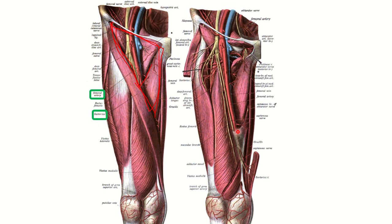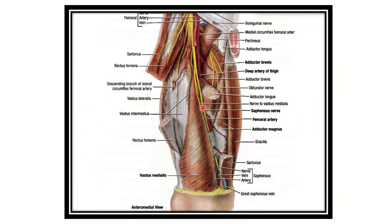The femoral artery passes through the adductor canal and goes to the popliteal area. This muscle covers the femoral artery distally to the femoral triangle and needs to be retracted. We can see this muscle is the sartorius muscle. When the sartorius muscle is removed, the femoral artery becomes visible.